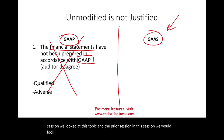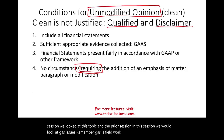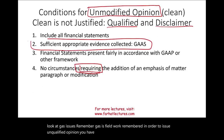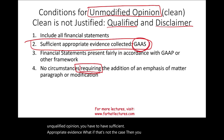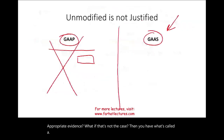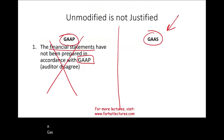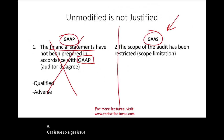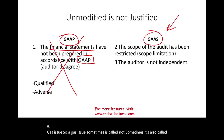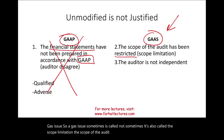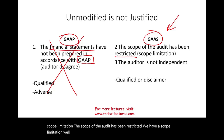Remember, GAAS is fieldwork. In order to issue an unqualified opinion, you have to have sufficient appropriate evidence. What if that's not the case? Then you have a GAAS issue. A GAAS issue is also called a scope limitation — the scope of the audit has been restricted.